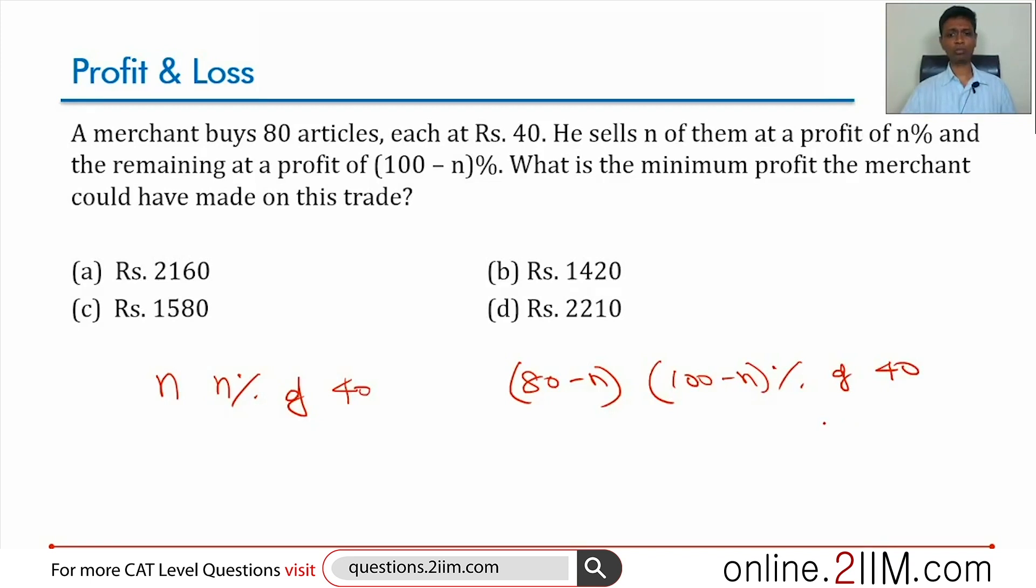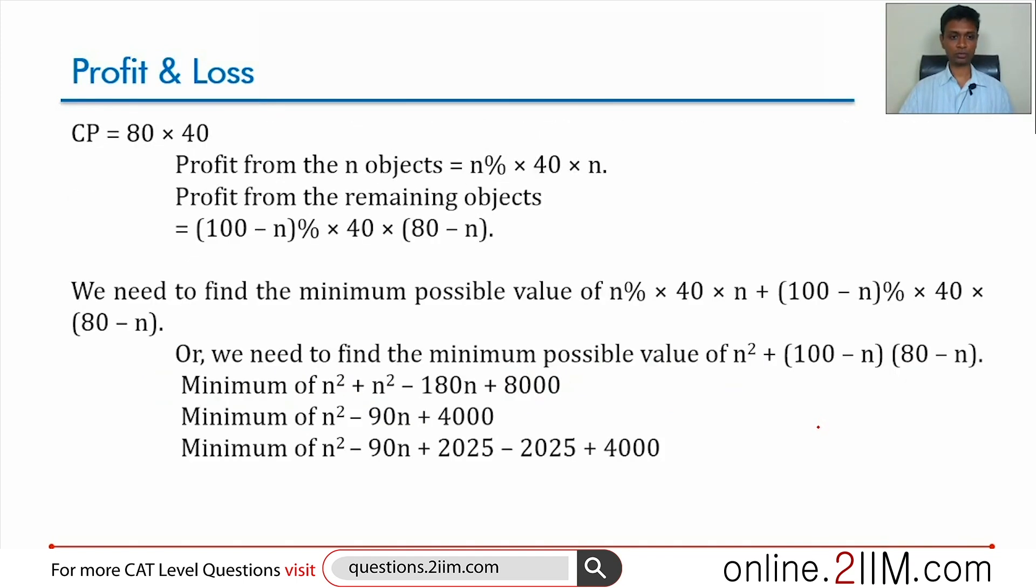We need to find the minimum of this value, so I'm going to expand this and see where that takes us. n percent of 40 into n, and 100 minus n percent of 40 into 80 minus n.